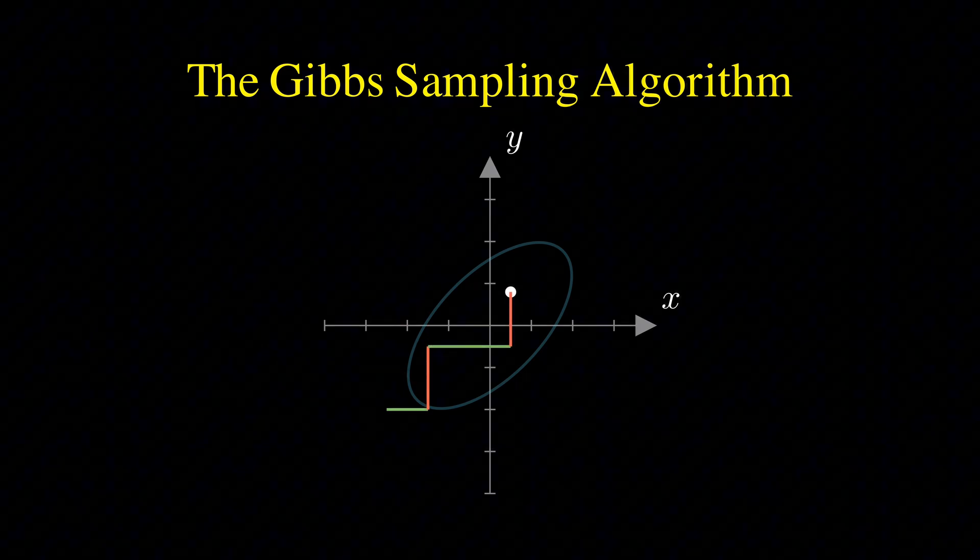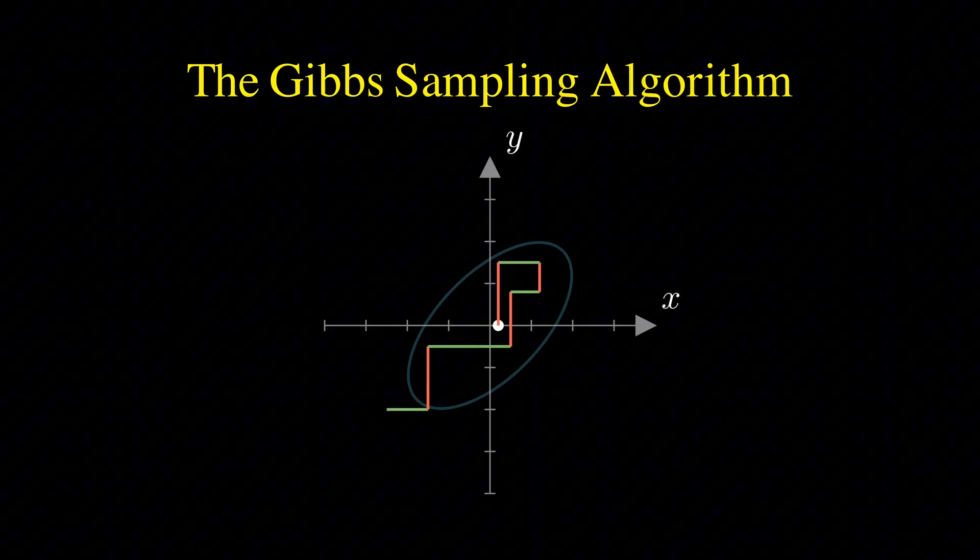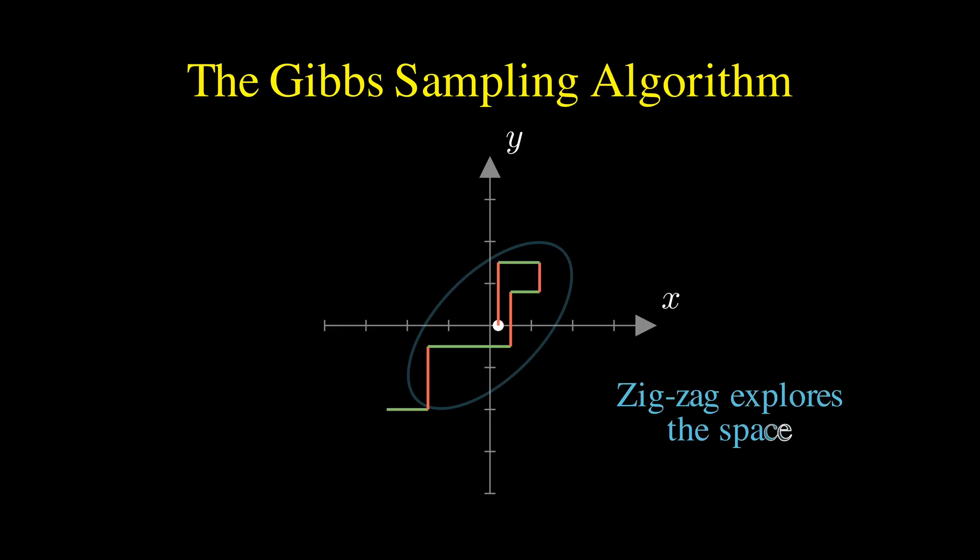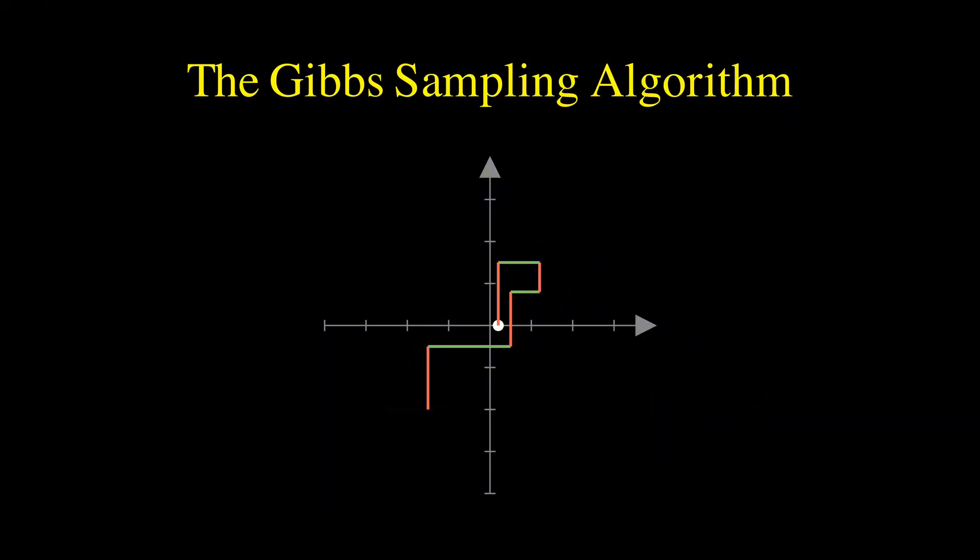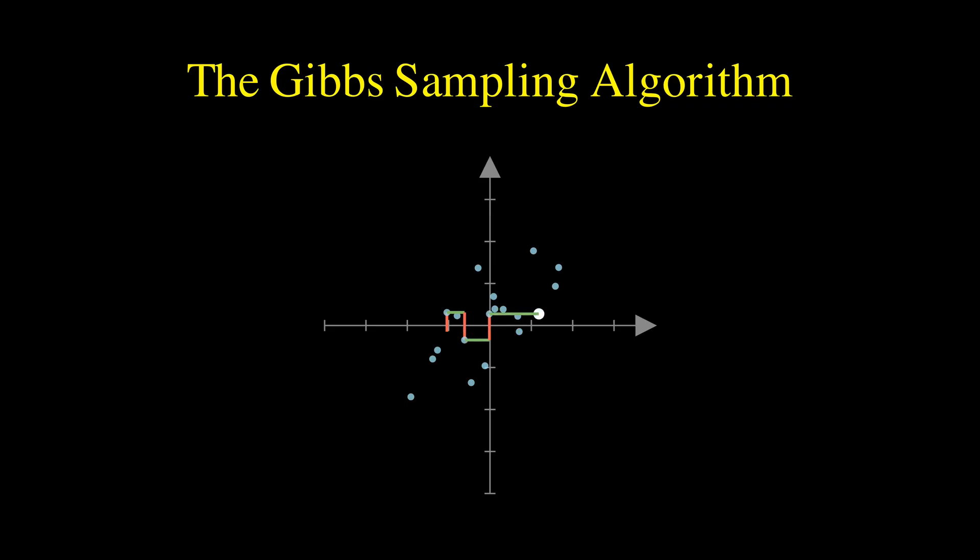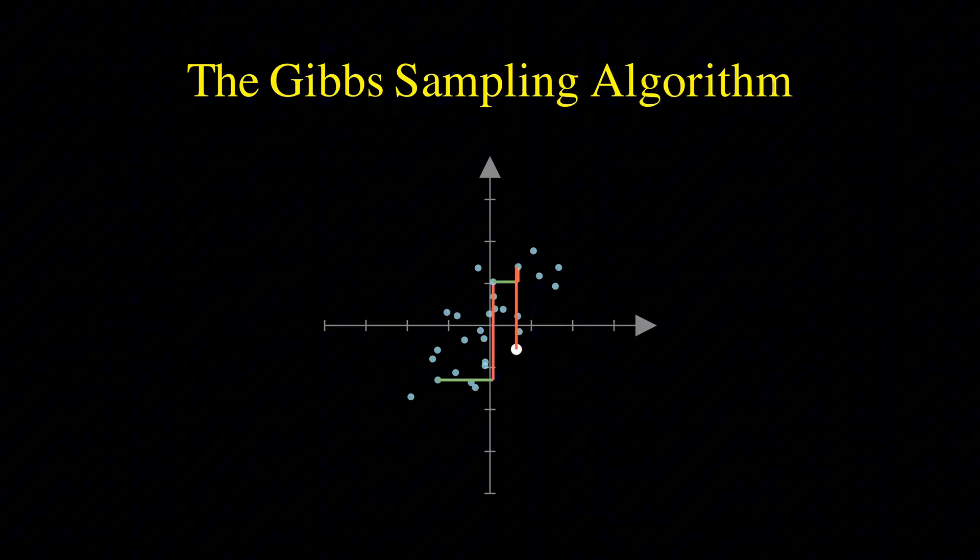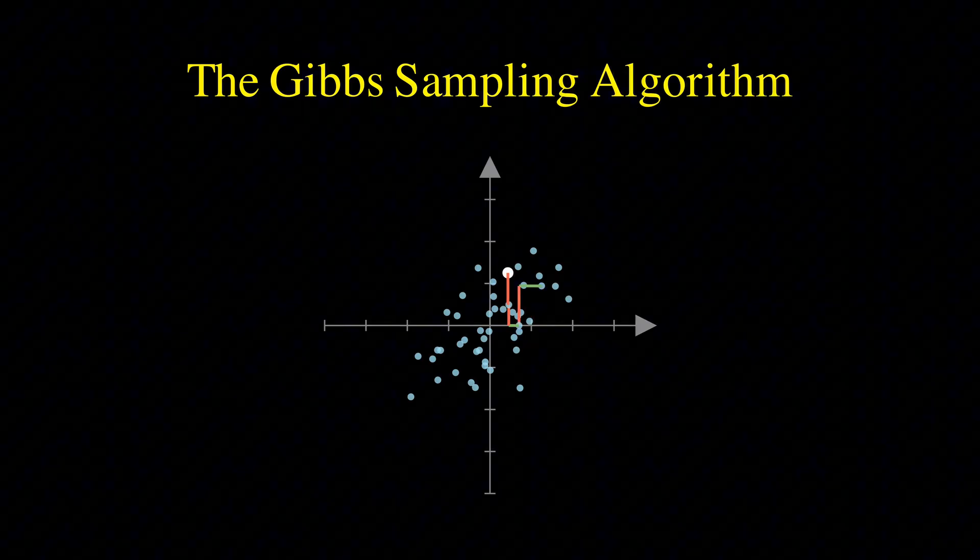Sample x given y. Then sample y given x. Over time, this zigzag path explores the space. Ideally, after many steps, the collection of points we visited will match our target distribution. We'll have many samples in the high density center and fewer in the low density tails, just as we wanted.